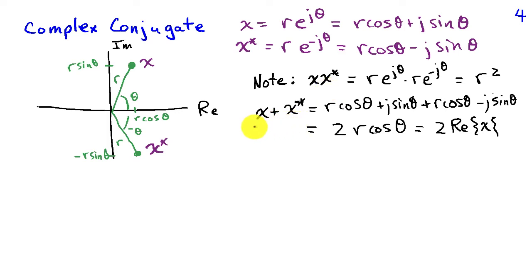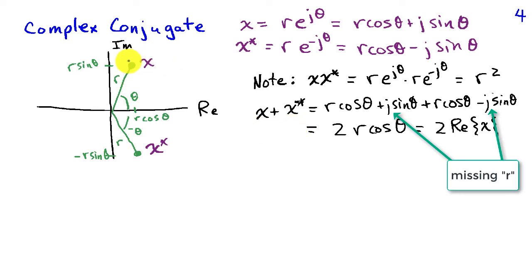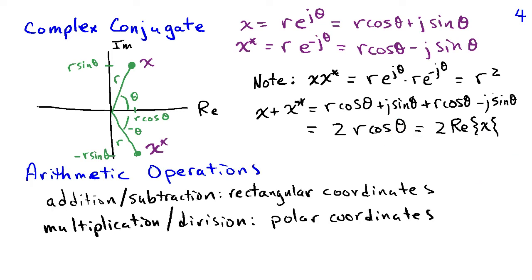It's much easier to add numbers in rectangular coordinates. Taking x plus x-conjugate, the imaginary components cancel and the real part doubles to give 2r cosine theta. So for arithmetic operations, addition and subtraction are generally easier in rectangular coordinates — both to compute and to visualize. In contrast, multiplication and division are much easier both to perform and to understand in polar coordinates.